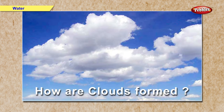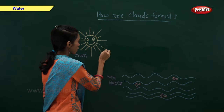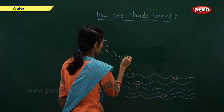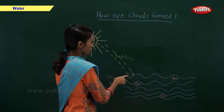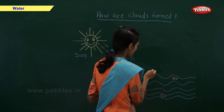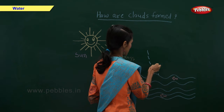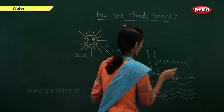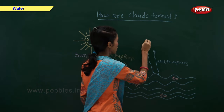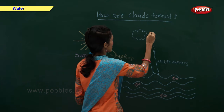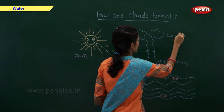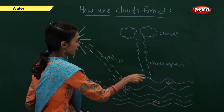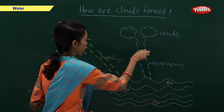How are clouds formed? Sun rays fall on the water. Water gets vaporized. Water vapors go up and form clouds.